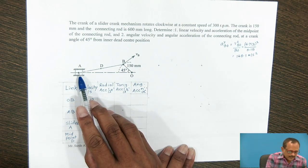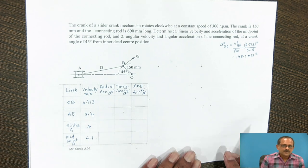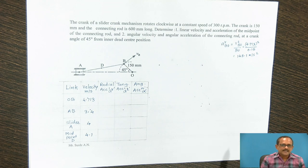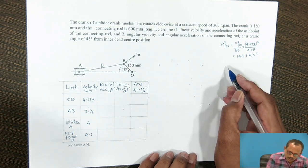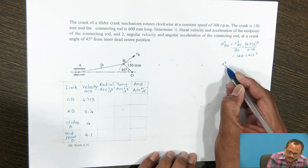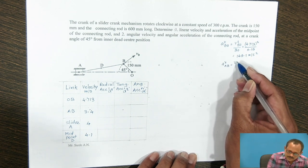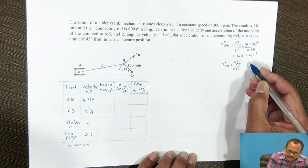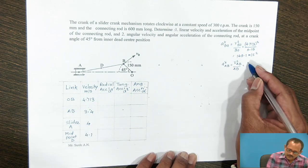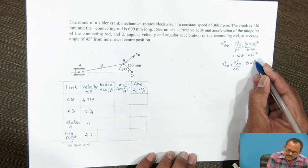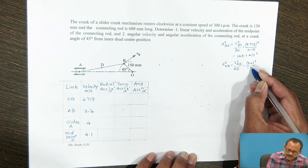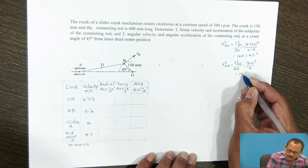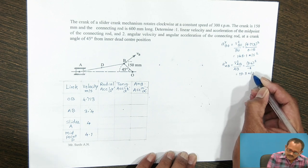Similarly, acceleration of A with respect to B will have two components: a tangential component and a radial component. The radial component of AB is equal to V squared AB divided by link length AB. Velocity of A with respect to B is 3.4 squared divided by link length AB of 0.6 meter, and that is equal to 19.3 meter per second square.